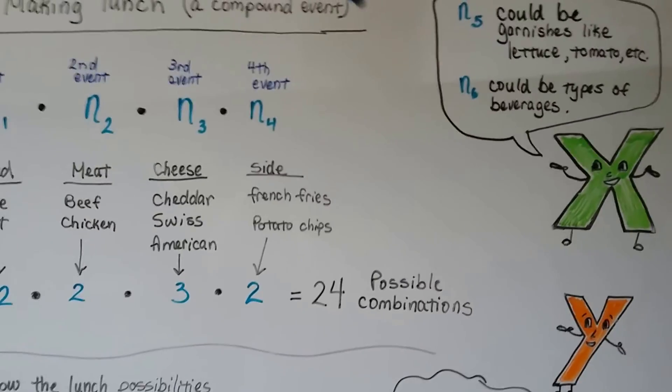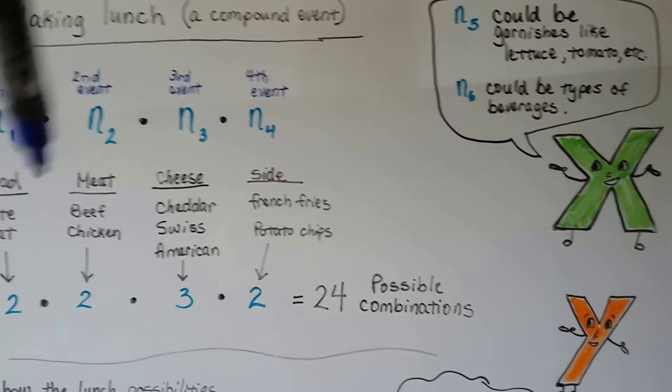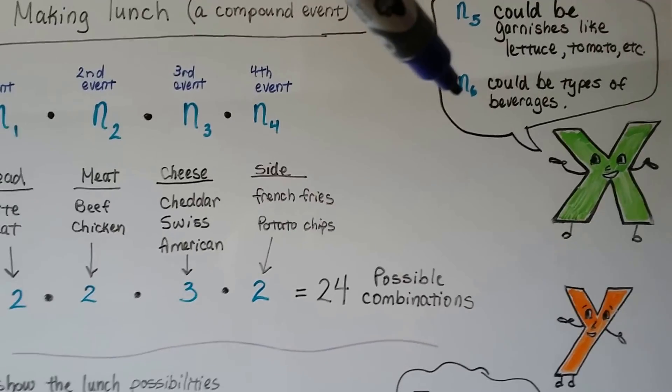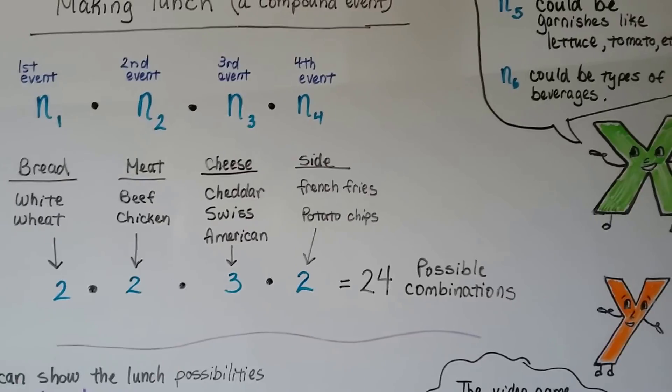And we could do n sub 5. Could be garnishes like lettuce, tomatoes, pickles, whatever you want to put on the sandwich. N sub 6 could be the types of beverage. Is it going to be water, soda, coffee, tea?